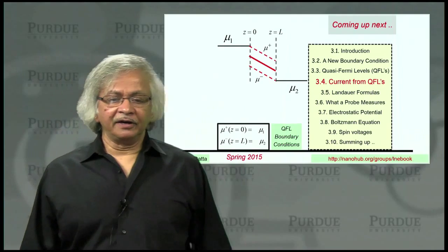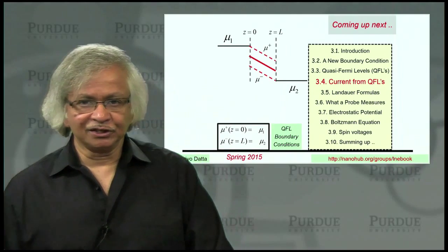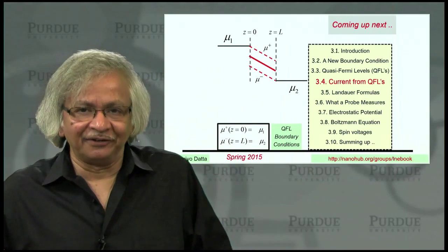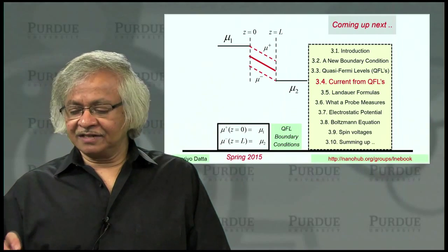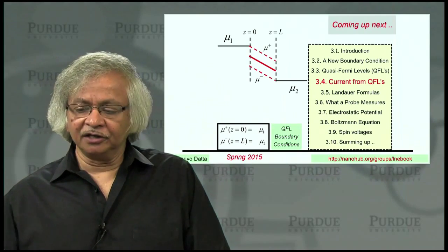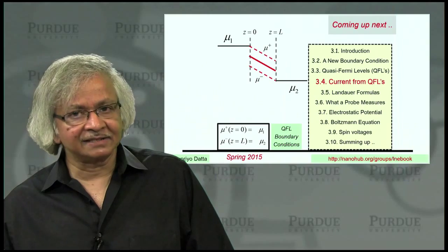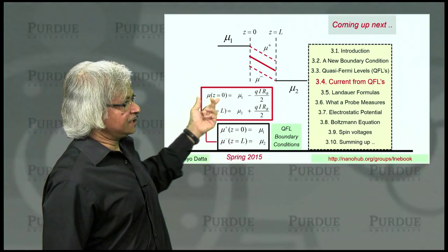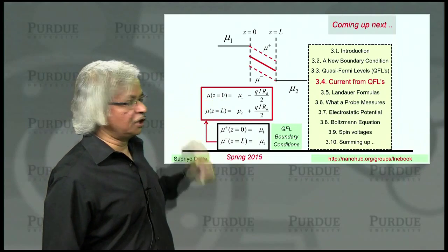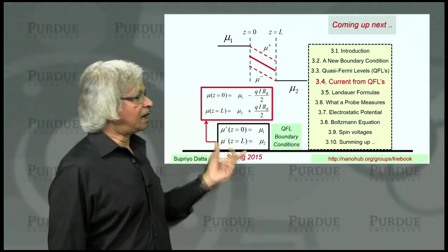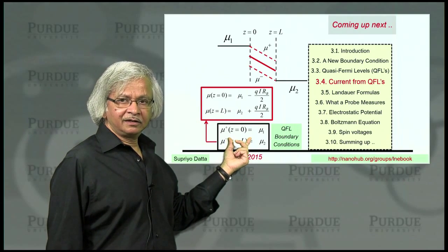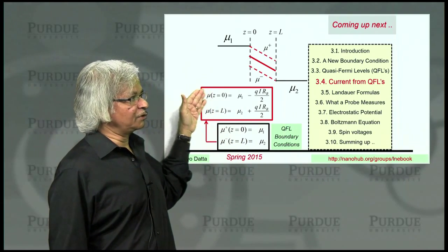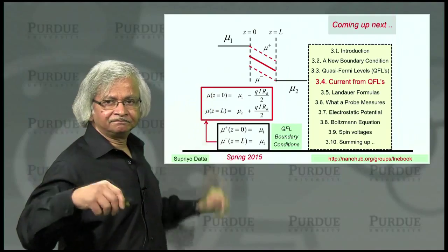With that, we are ready to move on to the next step, which is these are the quasi-Fermi level boundary conditions. The question is how do we connect it to the boundary conditions we talked about in the last lecture, which is for the average of them, the electrochemical potential. So what we'll show in the next lecture is how what we just obtained implies what we had deduced earlier. Thank you.